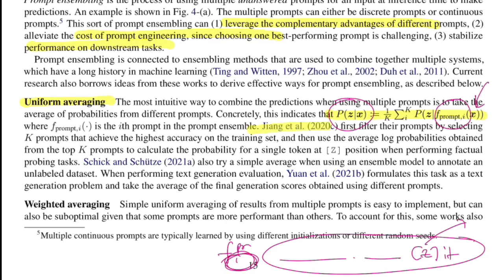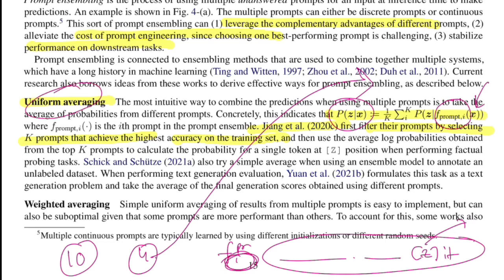You can add a prior step of selecting which k prompts to use. Jiang et al. filtered prompts by selecting the top-k that achieved highest accuracy on the training set. For example, if you design 10 prompts and find the top four perform best on the training set, you use just those four in the ensemble to compute the final average for the z value.